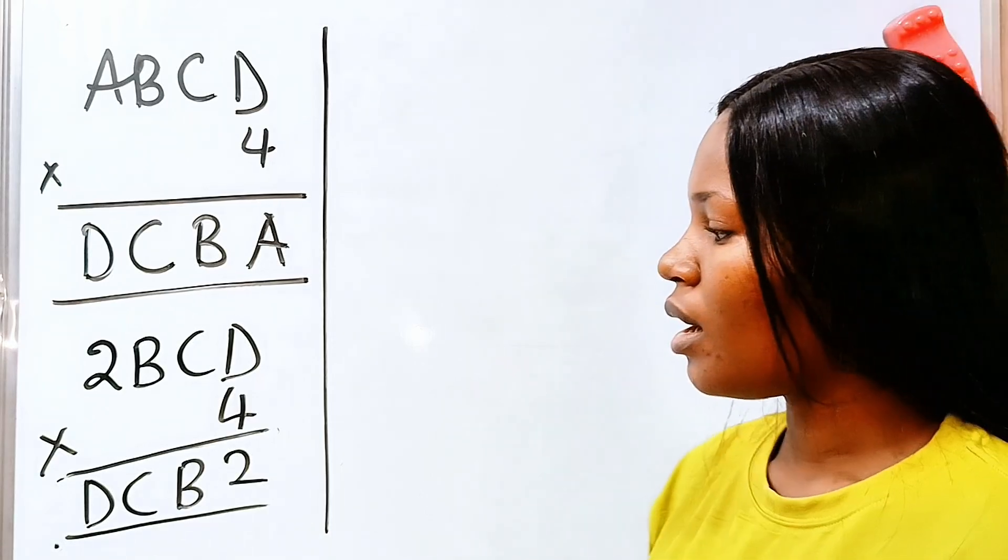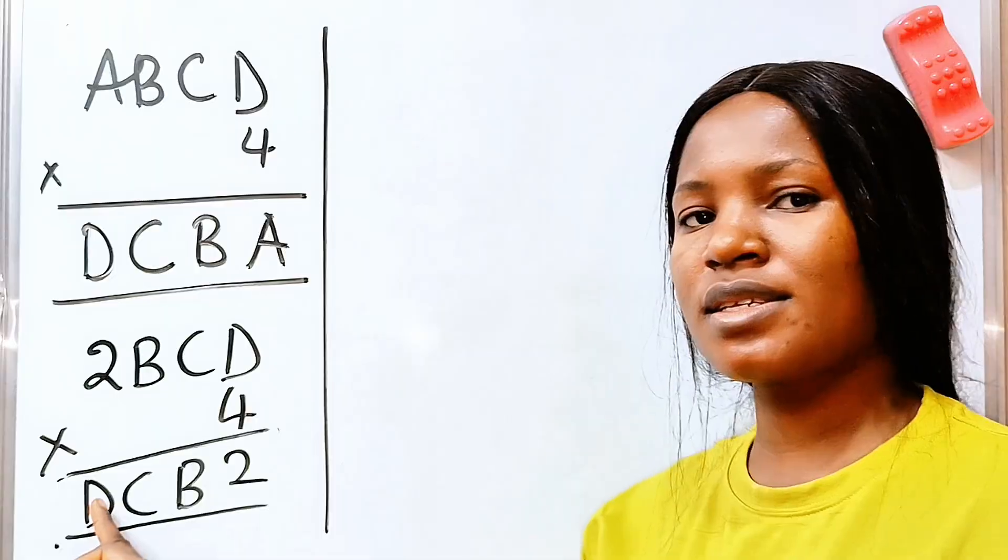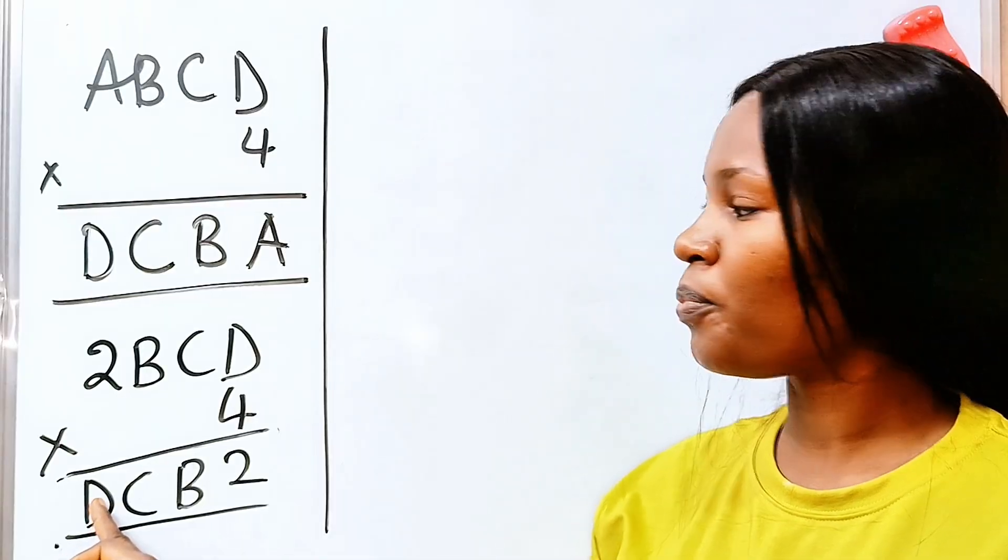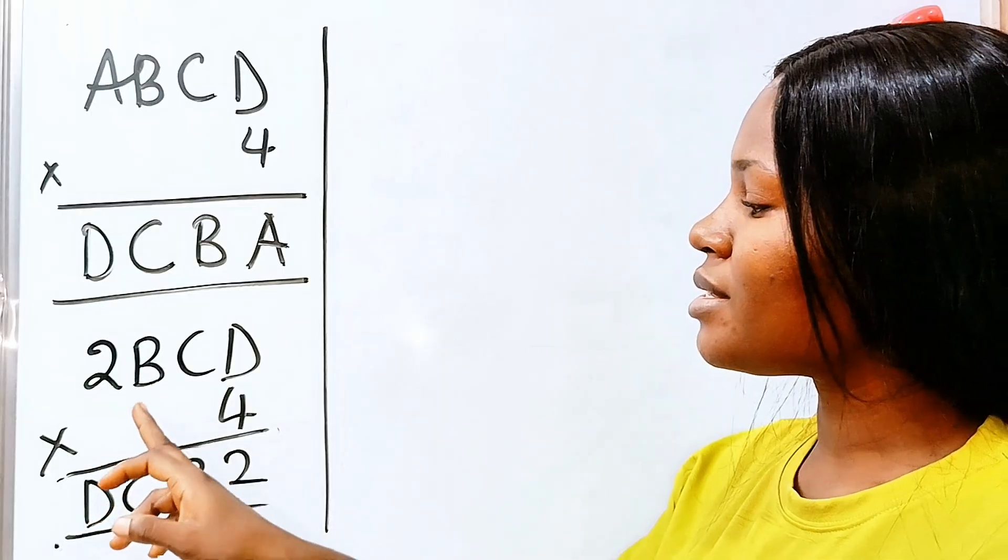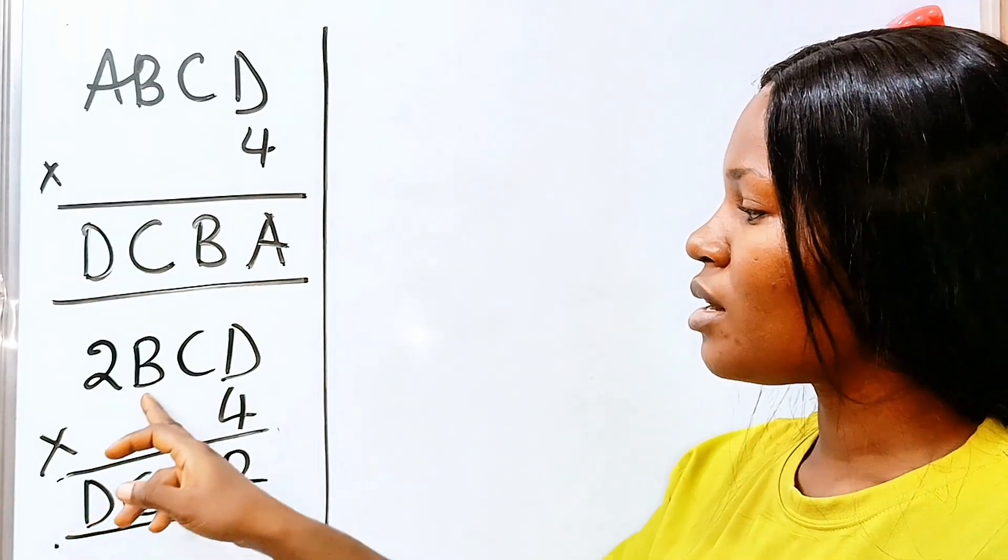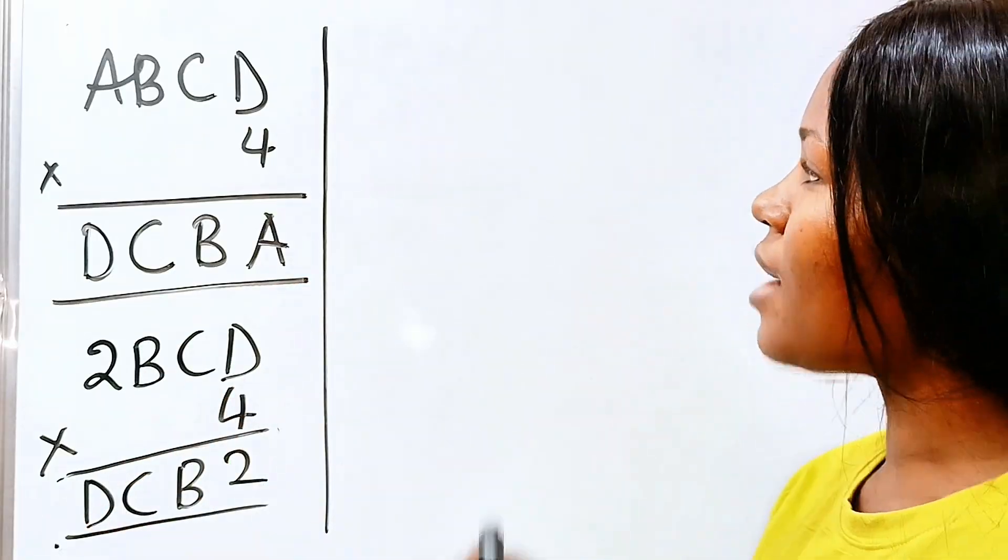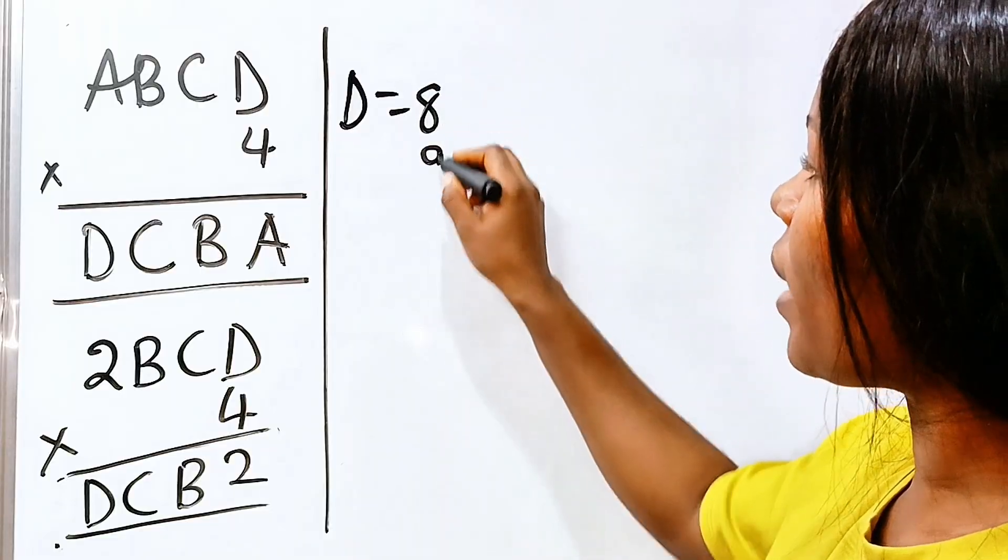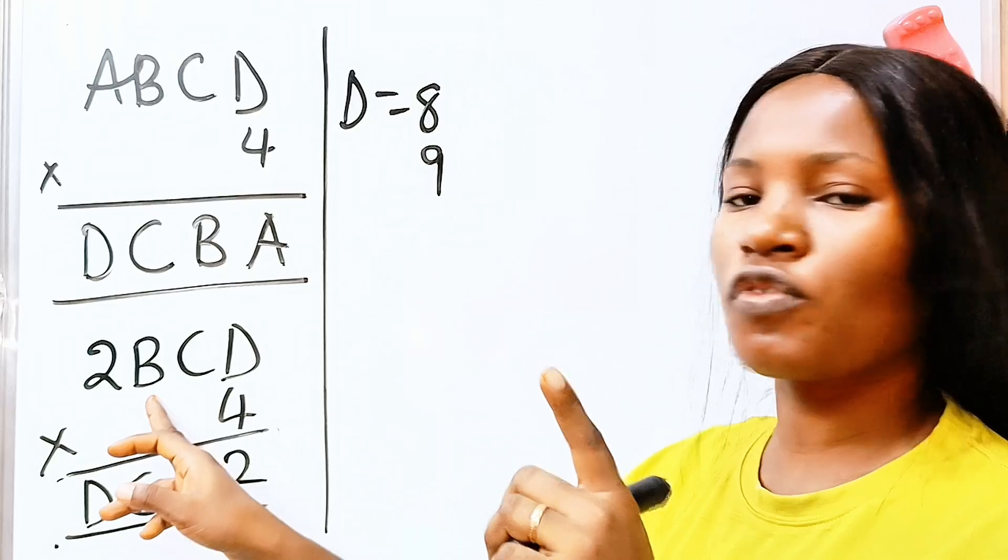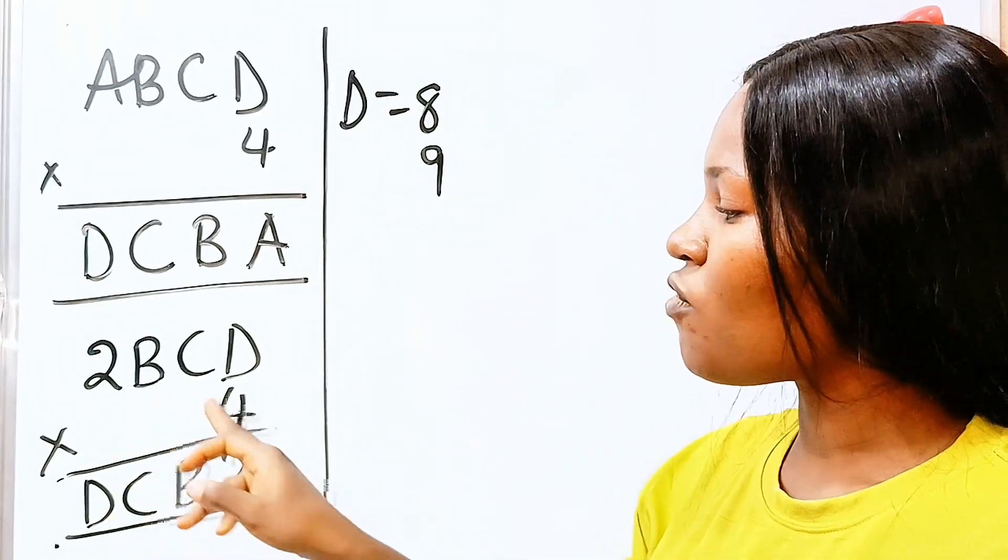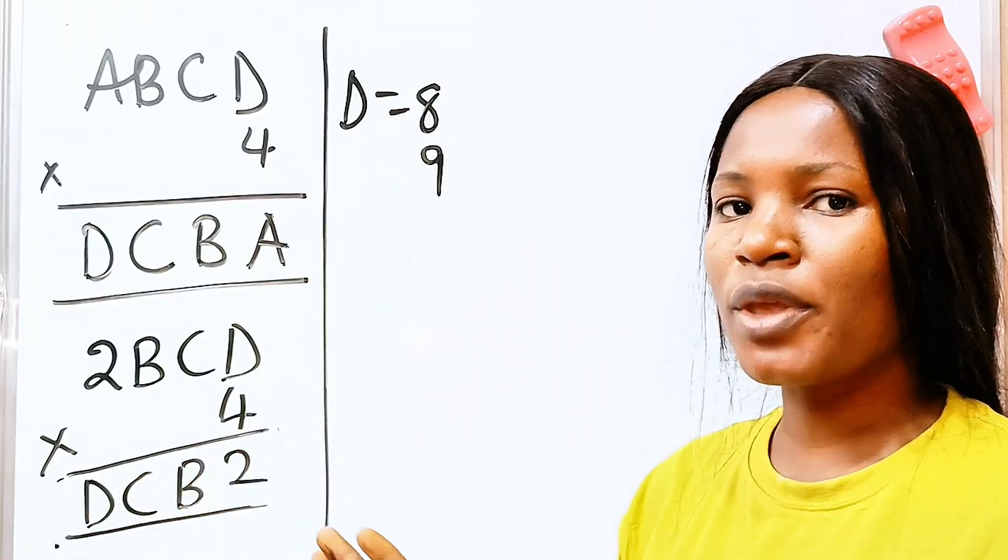Now, we have 4 times 2 here. It should give us 8. But you know that it is possible that there is a carry from here. And since this is 8, the only carry we can have here is only 1. That way, our D is either 8 or 9. If we have a carry that is more than 1, let's say we carry 2 from here, we are going to have 4 times 2, 8, plus 2, 10. And that makes this number a 5-digit number. So, definitely, if there were to be a carry, the carry must be just 1.